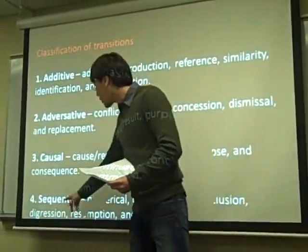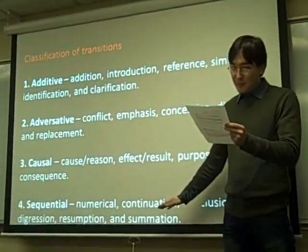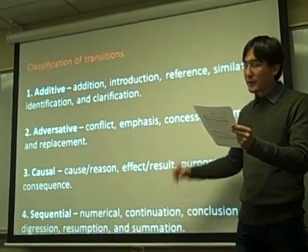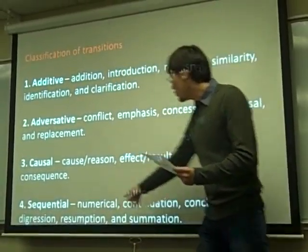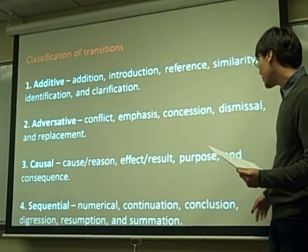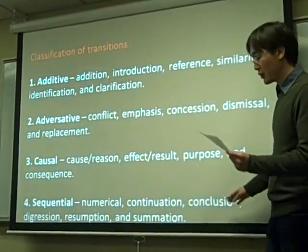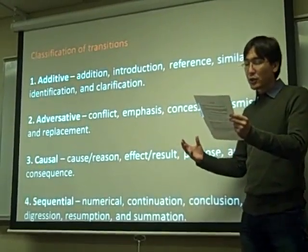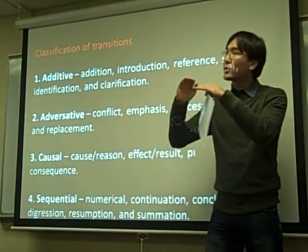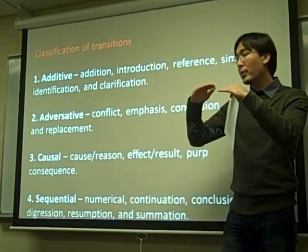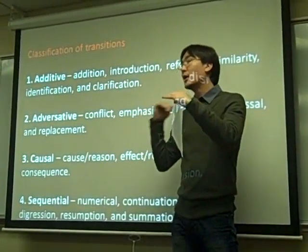The last group is sequential. This group shows the signal of chronological or logical sequence. They are divided into numerical, continuation, conclusion, digression, resumption, and summation. Mostly they are used to show you how your thoughts are being chronologically listed.